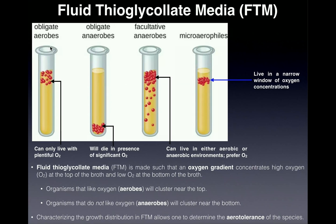The first type of organism is called an obligate aerobe. Aerobic means it likes oxygen, and obligate means it has to have oxygen to live — like being obligated to do something. Considering the top of the tube has high oxygen, you would expect to find obligate aerobes at the top third of the tube, with no organisms in the bottom two-thirds.